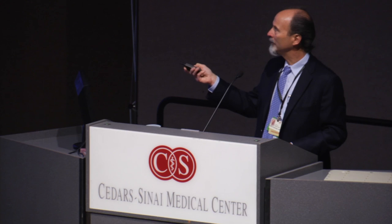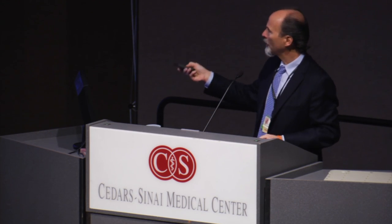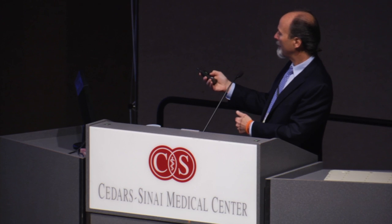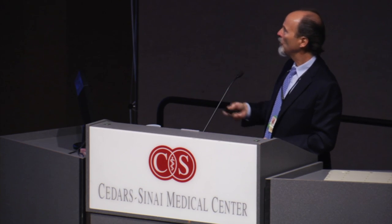Vascular invasion — when the tumor invades into lymphatics, they have a propensity to go to lymph nodes, or they can go into veins or even arteries, and then unfortunately have the capacity to spread to the lung, bone, or other sites. This confers an adverse prognostic indicator — it indicates the tumor might behave more aggressively. We include it in the report. Also, tumor cell necrosis is usually associated with aggressive growth and we report that as well.